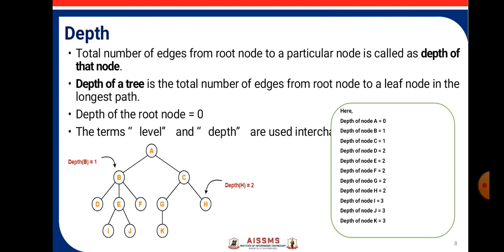Depth: The total number of edges from the root node to a particular node is the depth of that node. Depth of a tree is the total number of edges from the root node to the leaf node. The depth of the root node is zero and here all the depth of each and every node is given. Depth of the root node is zero and depth of K is 3. Whereas, depth of H, J, I, D is 3. Depth of D, E, F, G, H is 2.